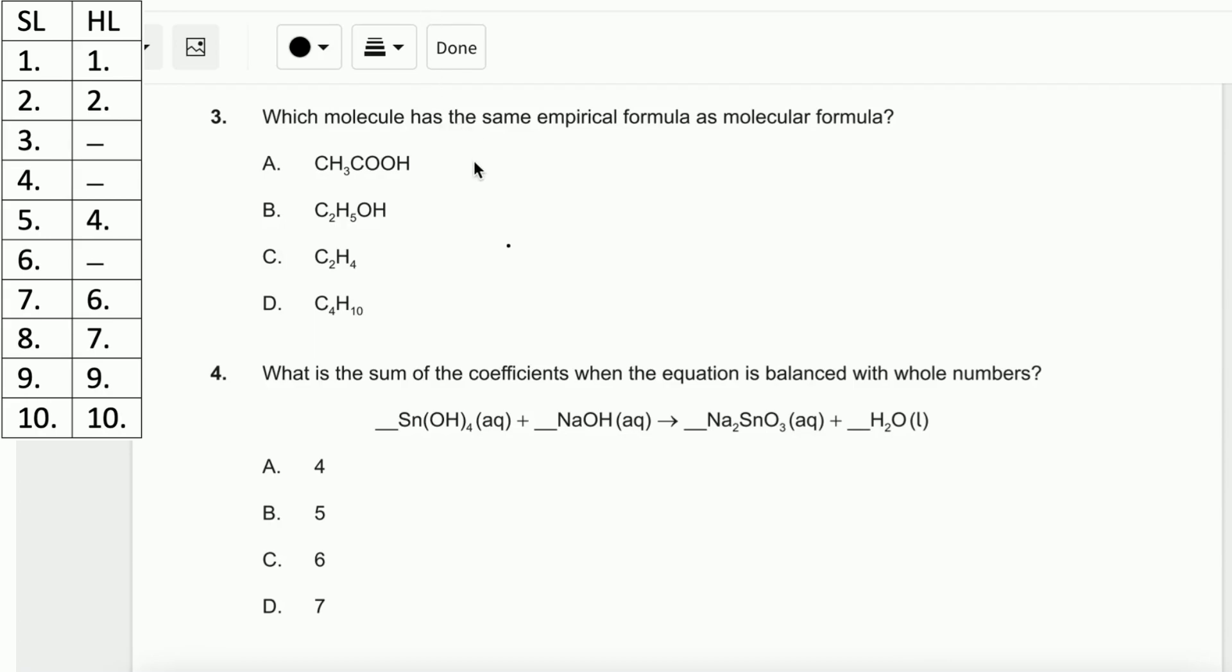Number 3. Which molecule has the same empirical formula as molecular formula? We need to find the simplest ratio and compare with the molecular formula. For A, CH3COOH, the empirical is C2H4O2. For B, C2H6O, this is both the empirical and molecular formula - they are the same. For C, the empirical is CH2, and for D, C2H5. The answer is B.